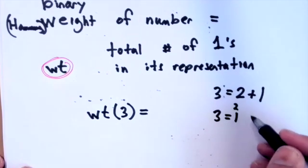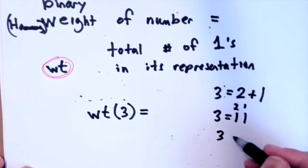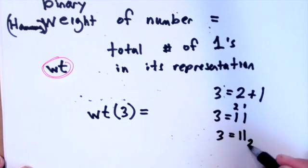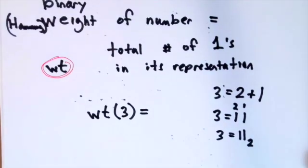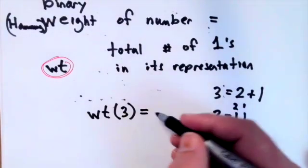This would be one, one, right? Three equals one one sub two. So the binary weight or the Hamming weight of three would be two.